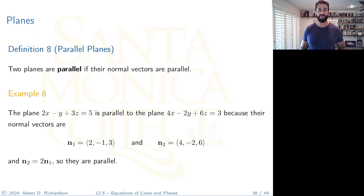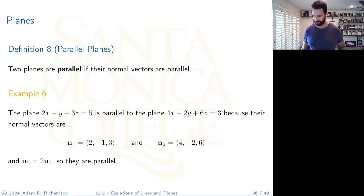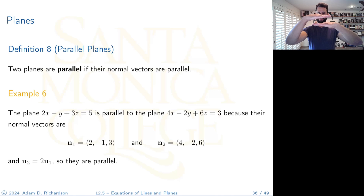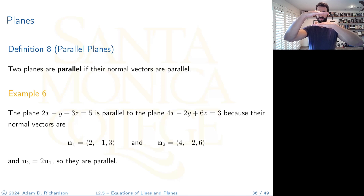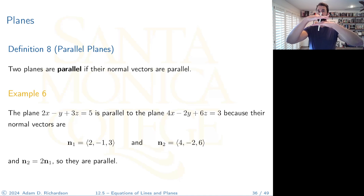Two planes are parallel if their normal vectors are parallel. This makes intuitive sense — like holding two hands parallel to each other, they're parallel because the vectors perpendicular to each surface point in the same direction.